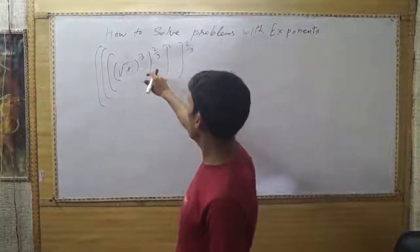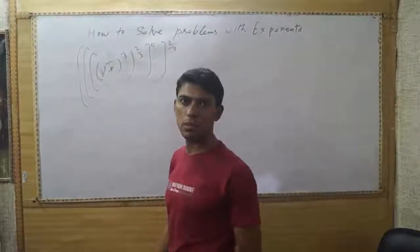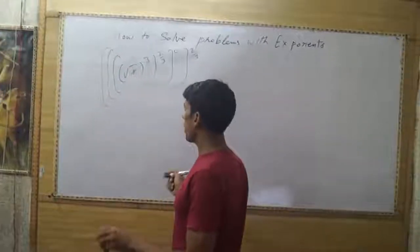And you see there are 1, 2, 3, 4, four power exponents. And we have to simplify this. First of all,